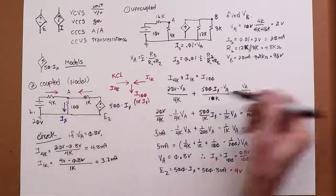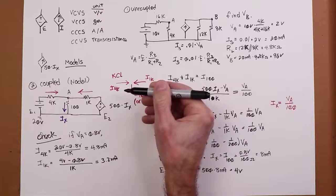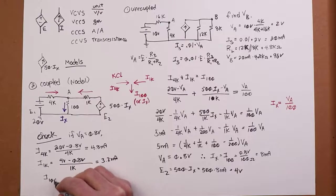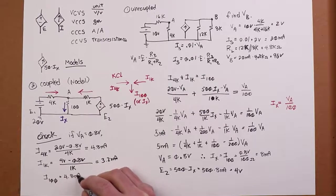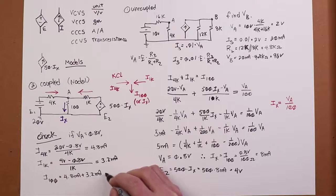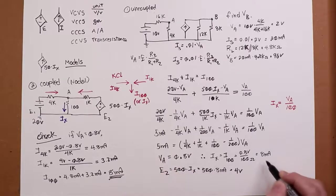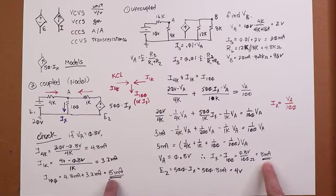Well, you have 4.8 coming in this way. You got 3.2 coming in this way. They combine and go down. So the I100 is the sum of those two. 4.8 mils plus 3.2 mils is, lo and behold, 8 milliamps. There you go. Everything cross-checks.